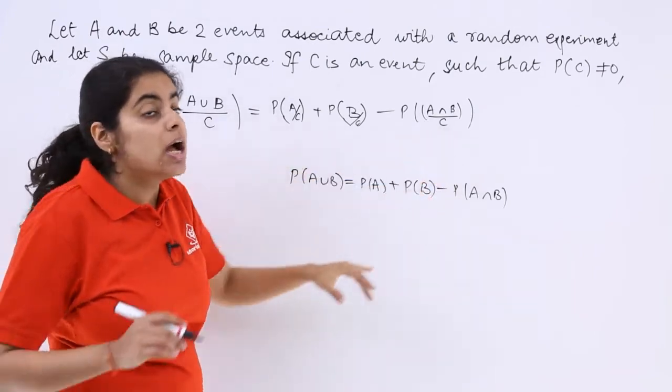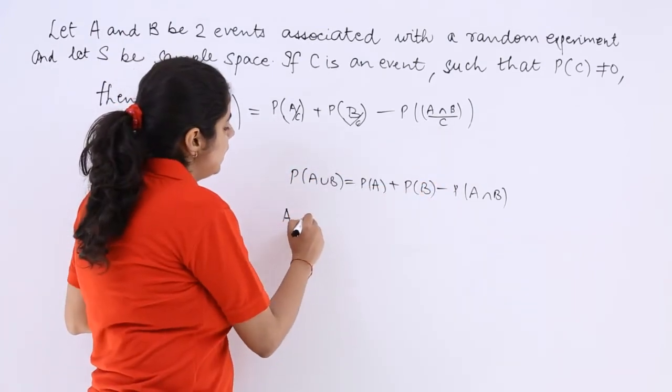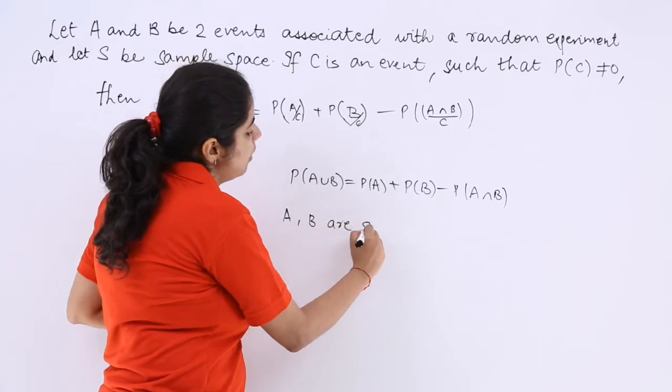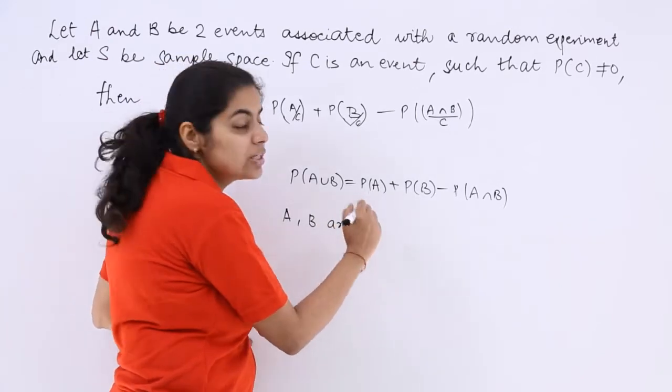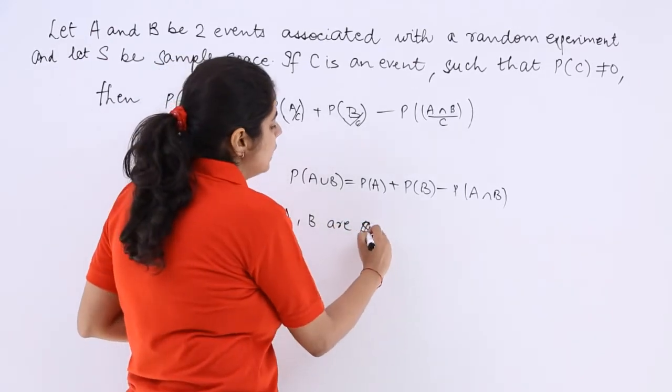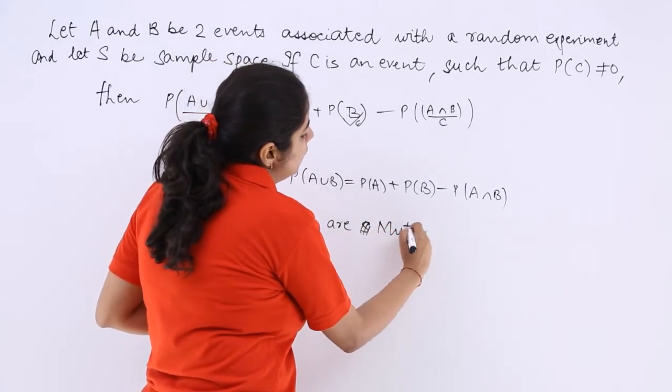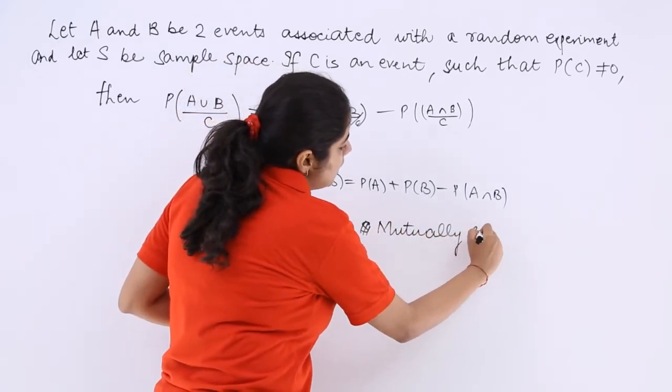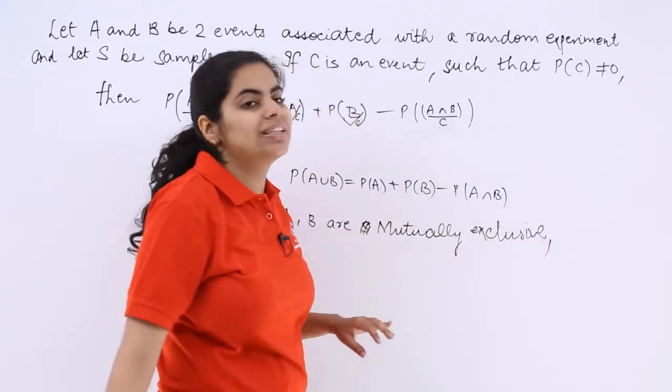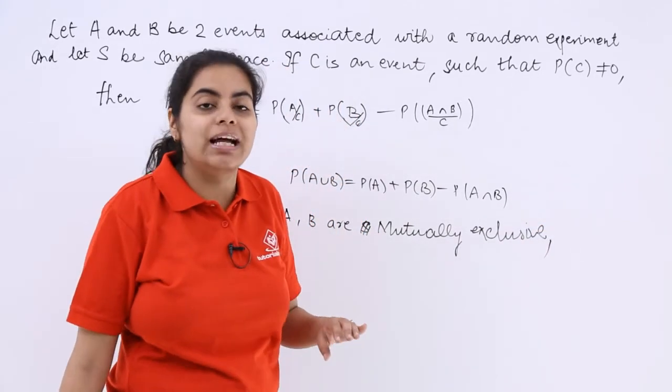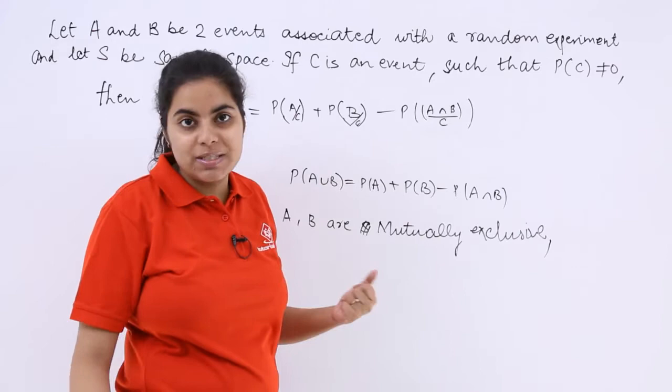So C is just a simple event. But now if I write that my A and B are mutually exclusive events, these events which are given to you are mutually exclusive. If I put this condition that A and B are mutually exclusive events, that means the intersection part would be 0.